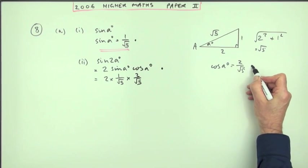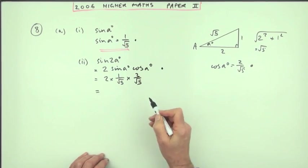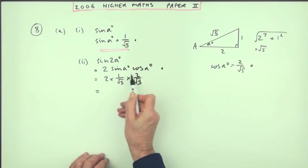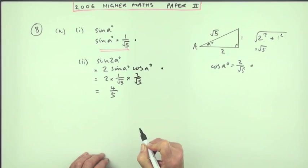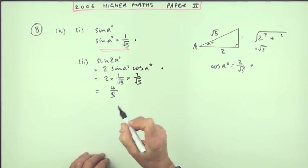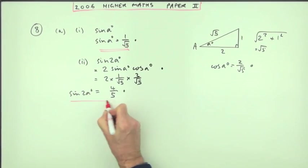I forgot to mention. That's the third mark for getting the cosine. Get the answer to this. Multiply the numerators. Two times one times two is four. Root five times root five reconstitutes the five again so you get four fifths. The sine of two A is four fifths. There's a painless four marks.